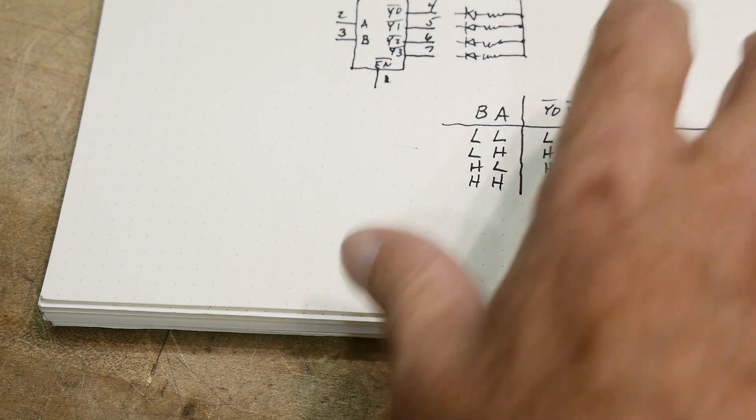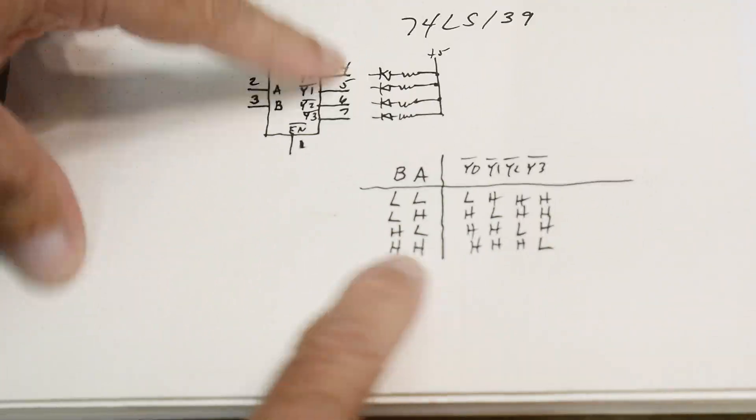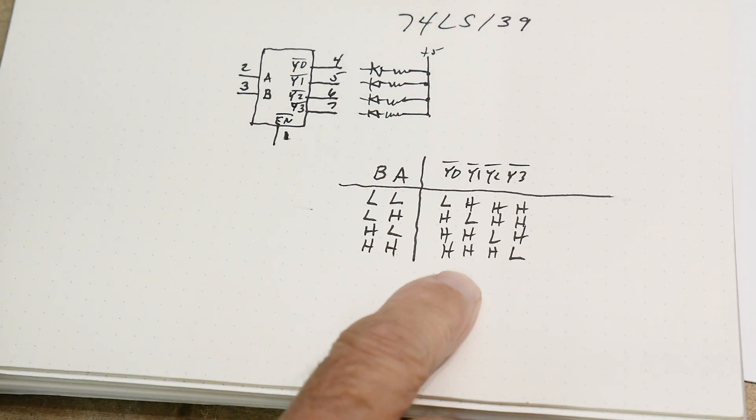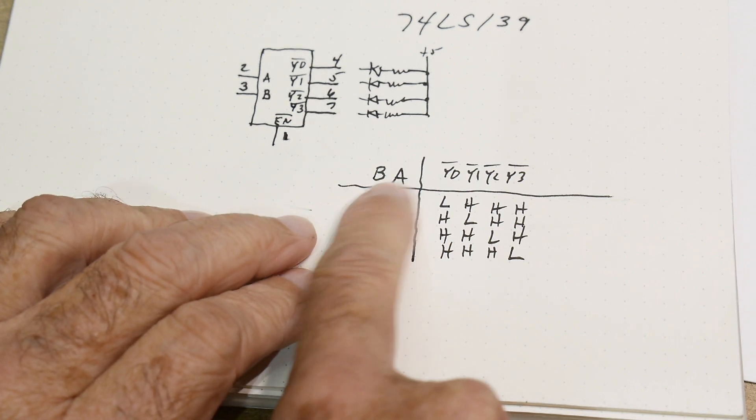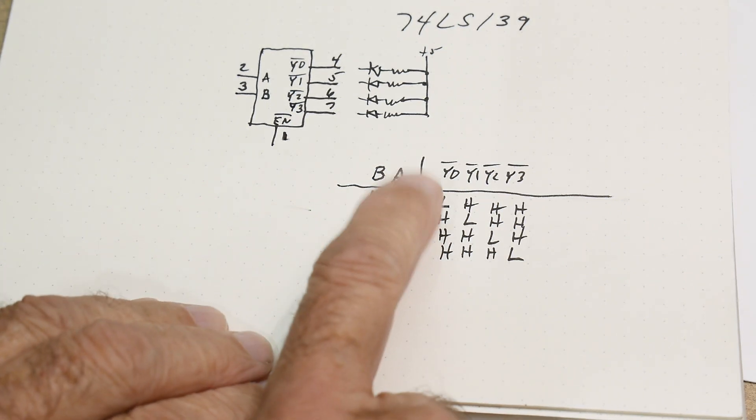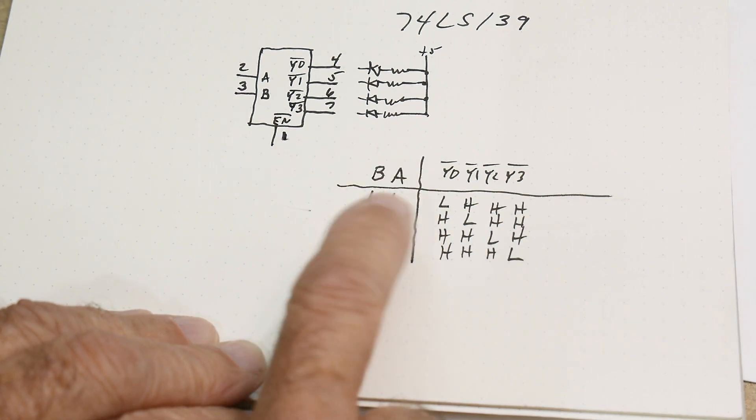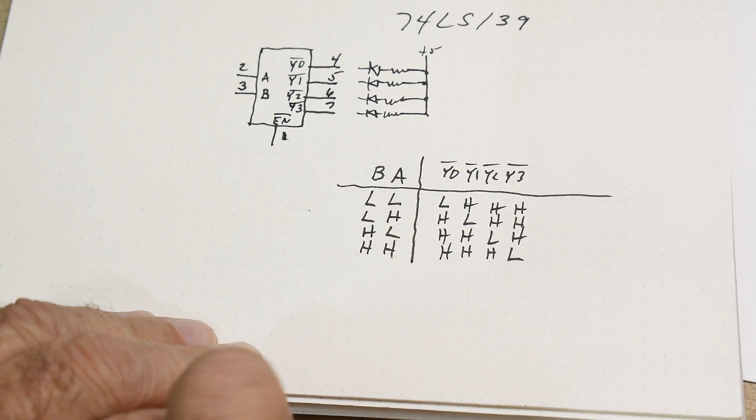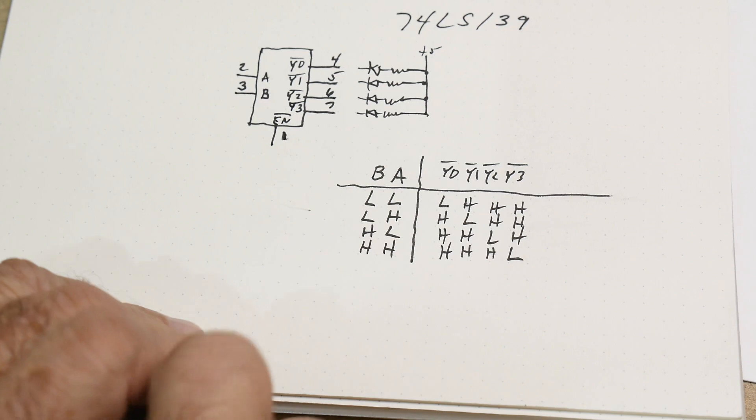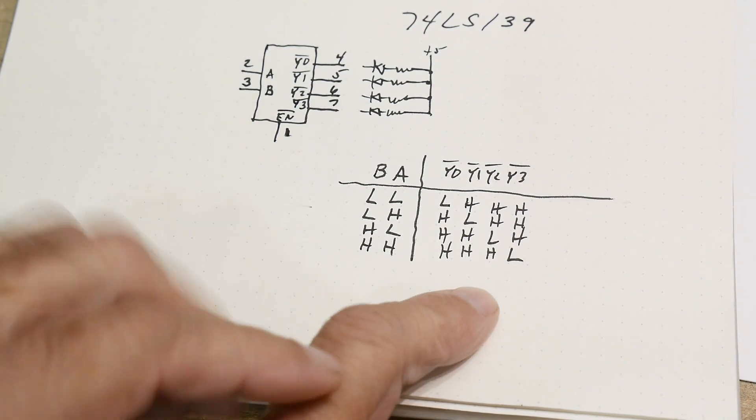So let's take a look at a truth table here. So you have the two lines input low low or low high. So it's zero zero, zero one, one zero, one one. But back in the day they put L's and H's instead of zeros and ones. So you might see that on old data sheets.